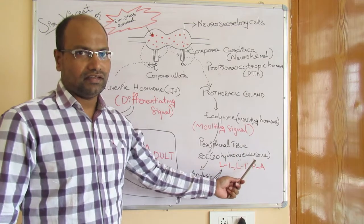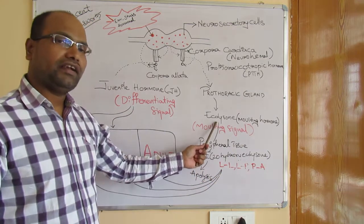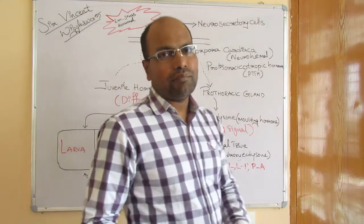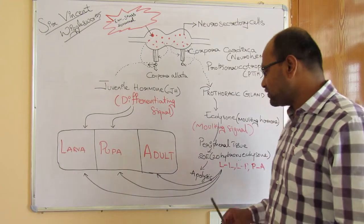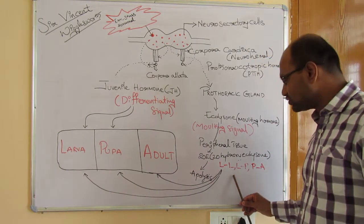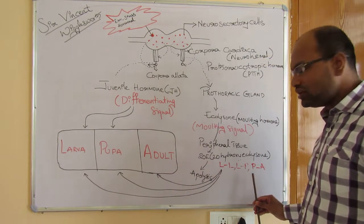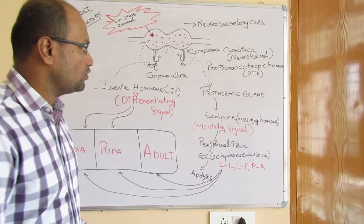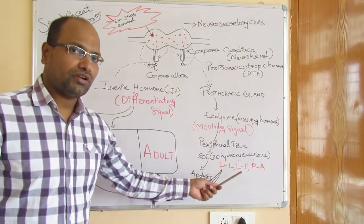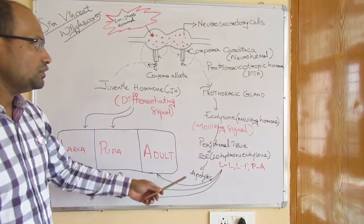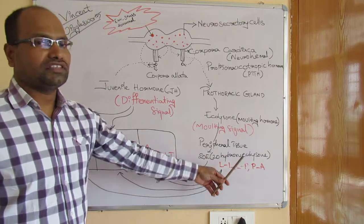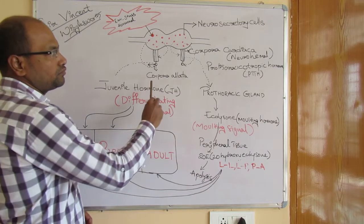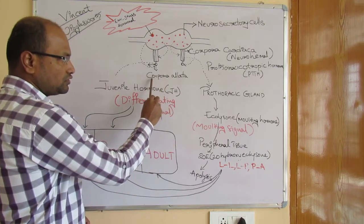In peripheral tissues, ecdysone is converted into 20-hydroxy ecdysone, which is the active form of the ecdysone hormone. This is the form that plays an important role during the metamorphosis process — from larval to larval structure, larval to pupal structure, and pupal to adult structure. The major player in conversion from one form to another is 20-hydroxy ecdysone.